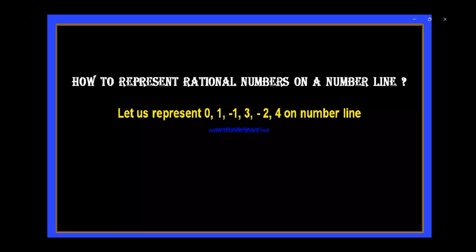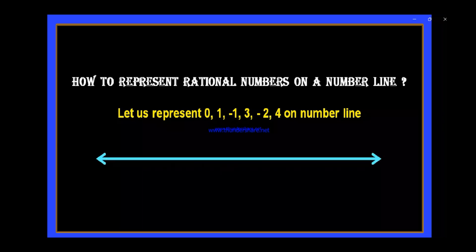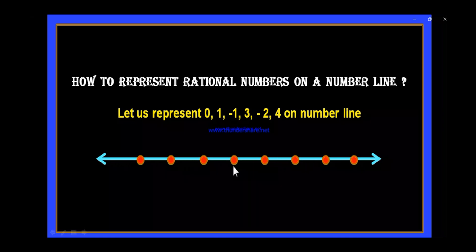In order to represent all these numbers on a number line, we have to draw a straight line first of all. Since it is a straight line, it should be extended up to infinity on both sides. On this straight line, let us keep some points at equal distances or equal intervals. Here, I kept some points on the number line with equal distances, maybe around the middle point.